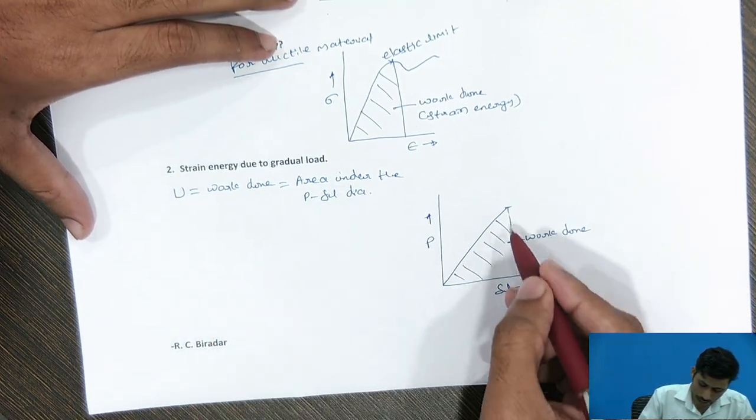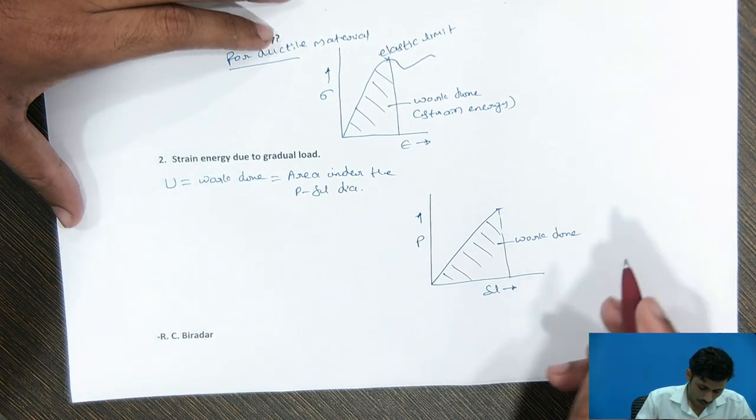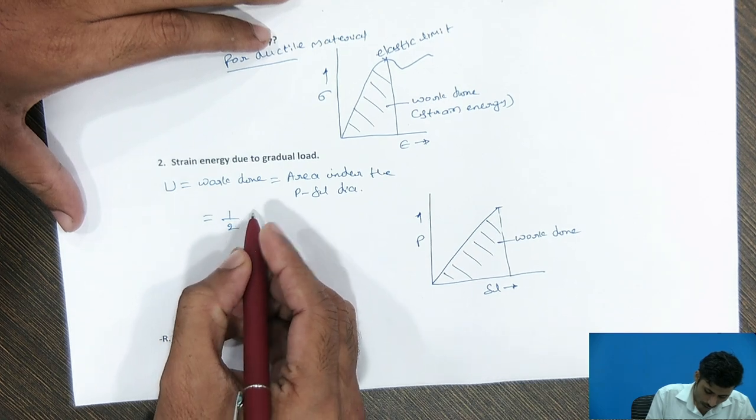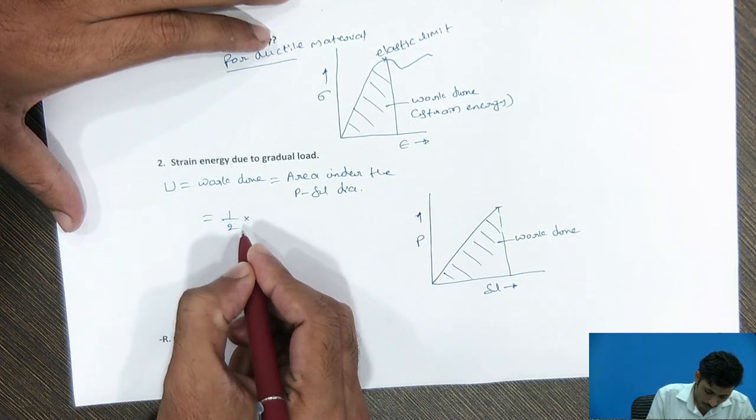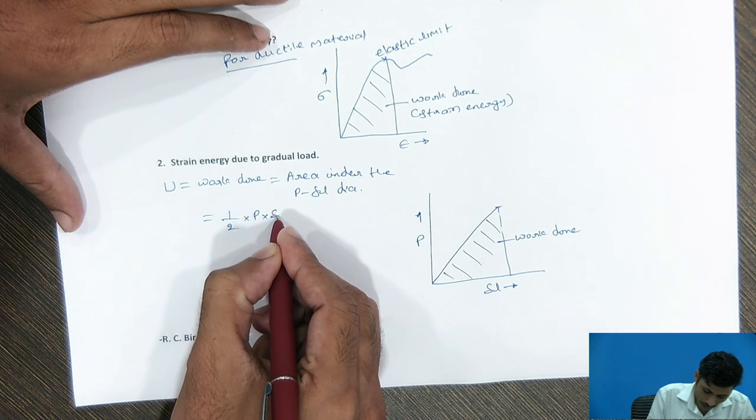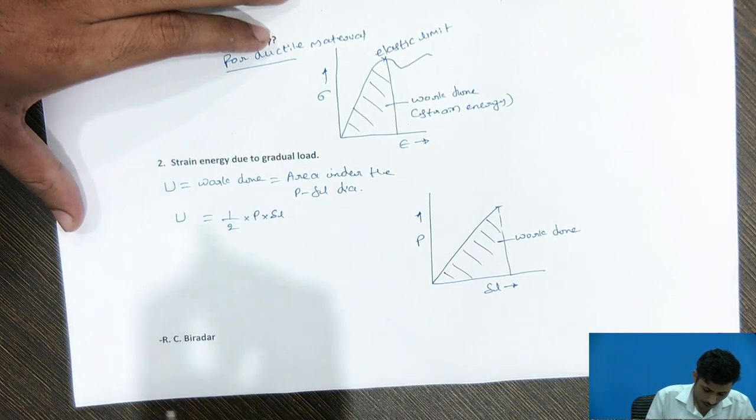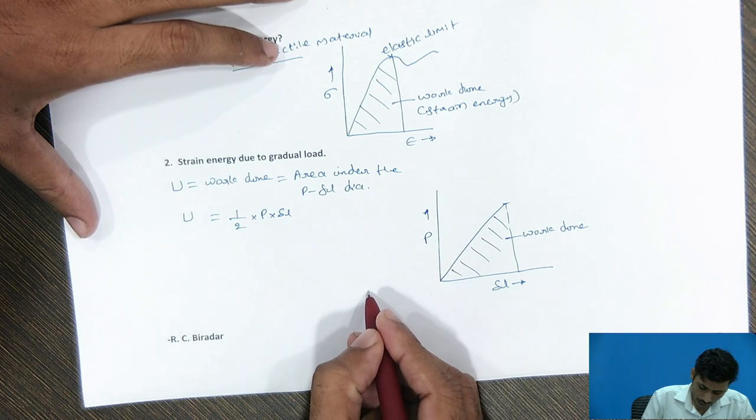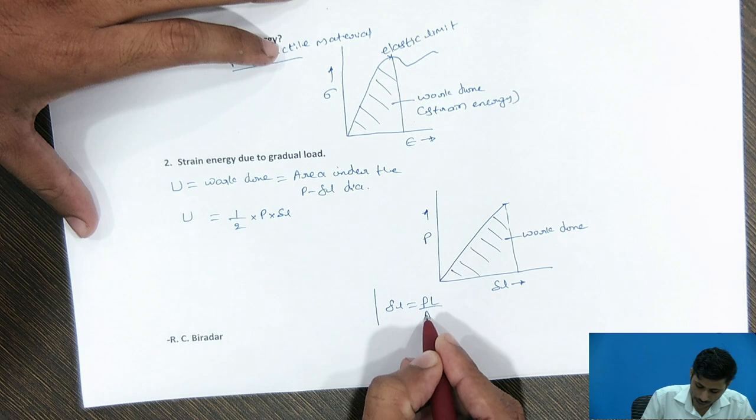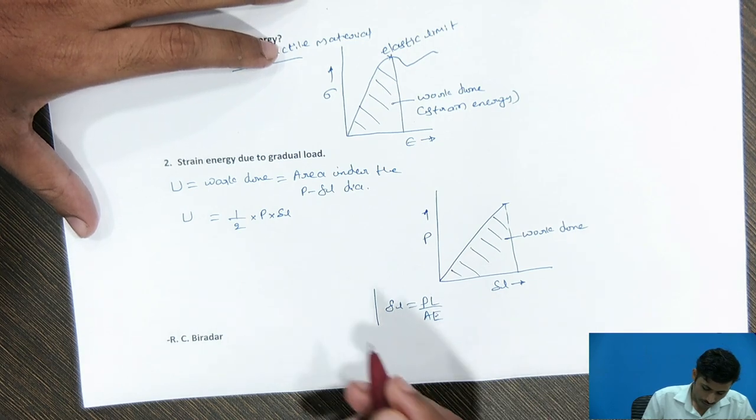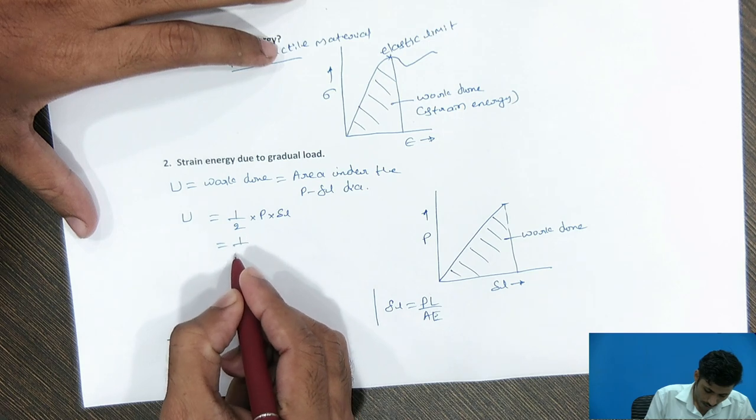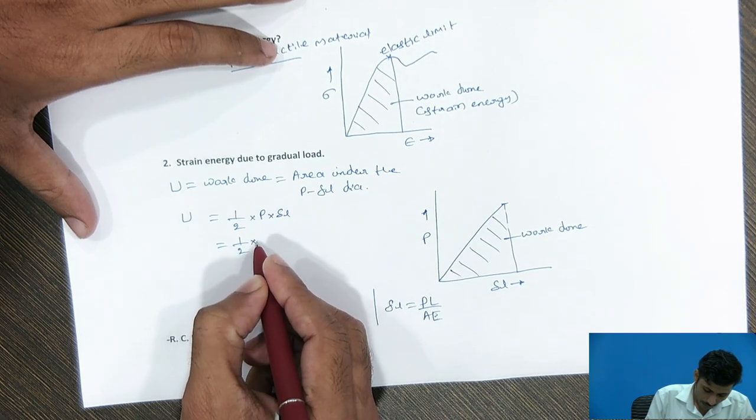Now, as this looks like a right-angled triangle. So, I can write area of this diagram as half into height from the diagram and base of the diagram as strain energy. And as we know, delta L is P L by A E. Replace delta L terms by P L by A E term.